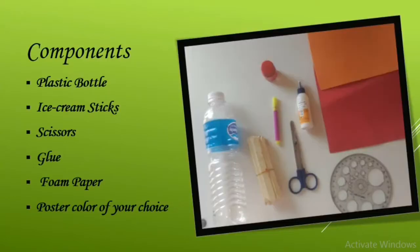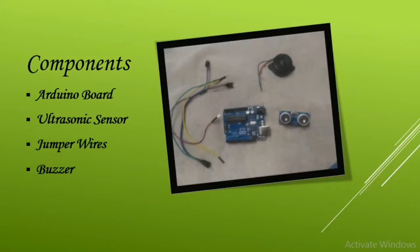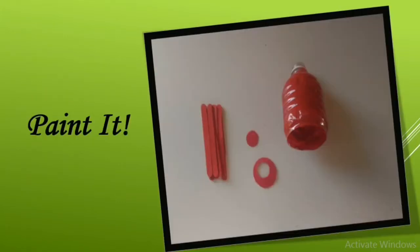Let's make this project. For this you will need some components: one plastic water bottle, some ice cream sticks, scissors, glue, foam paper, and a poster color of your choice. The electronic components you will need are an Arduino board, ultrasonic sensor, some jumper wires, and a buzzer.